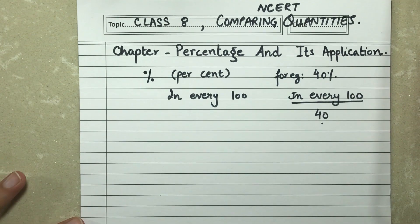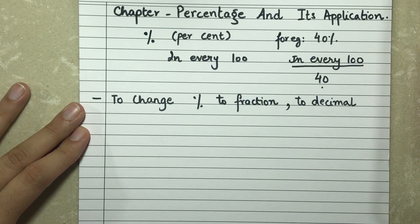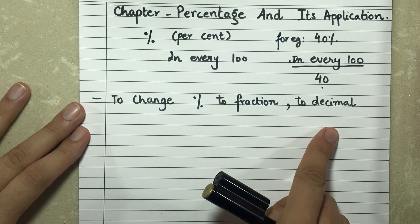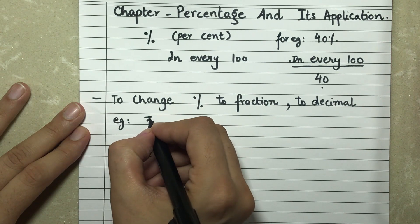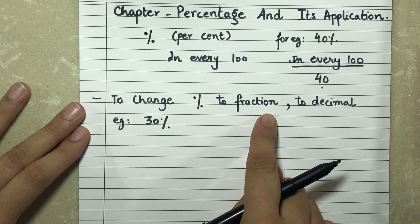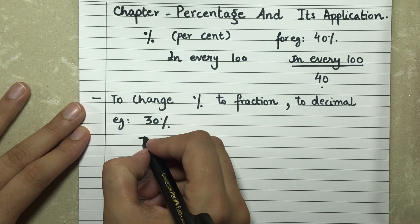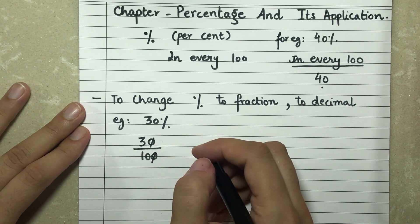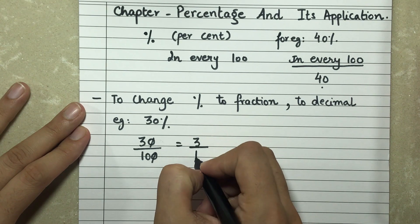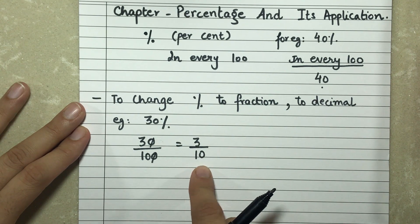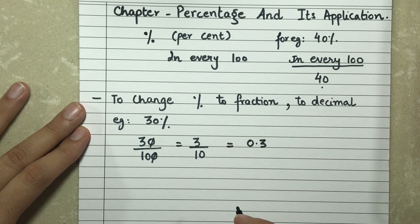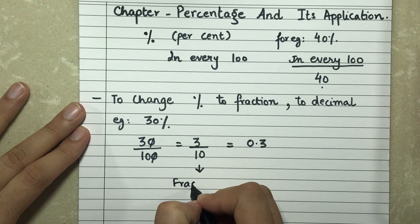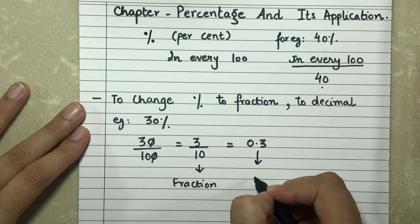Let's see the first topic. When we require to change a given percentage to fraction or decimal, if I have 30%, I simply divide it by 100. When I write it in this form, I simplify it further, so this becomes 3 by 10. This form is the fraction form, and if I need to convert it into decimal form, I will write 0.3. So 3 by 10 is the fraction form and this is the decimal form.